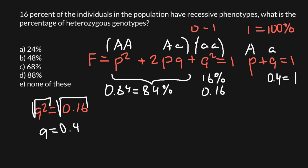It is now easy to find the frequency of the p allele, or dominant allele A. Since p plus q equals 1, p equals 1 minus 0.4, which gives us 0.6. Now we have all the numbers we need to find the frequency of the heterozygous genotype, which is represented by 2pq in the formula.